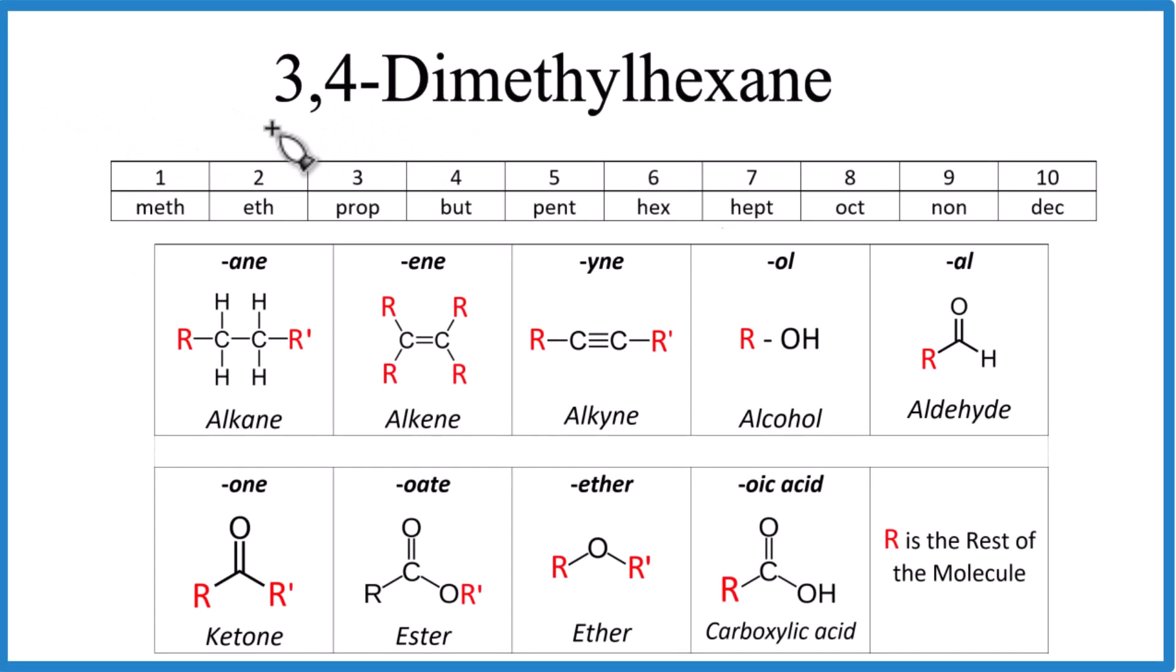Let's draw the structure for 3,4-dimethylhexane. The first thing you'll note is it ends in A-N-E. That means it's going to be an alkane, so we're only going to have single bonds, carbons and hydrogens, just single bonds.